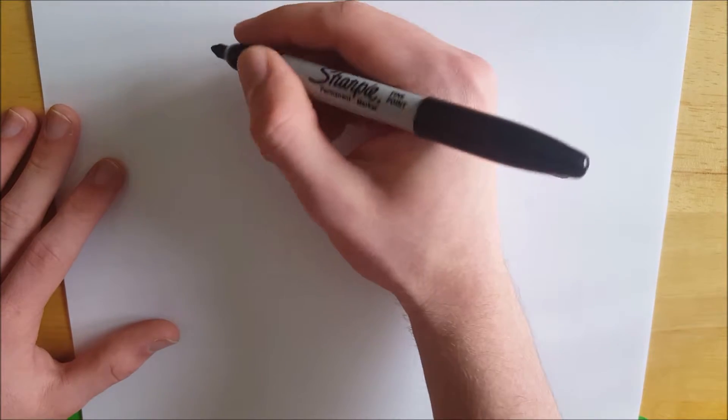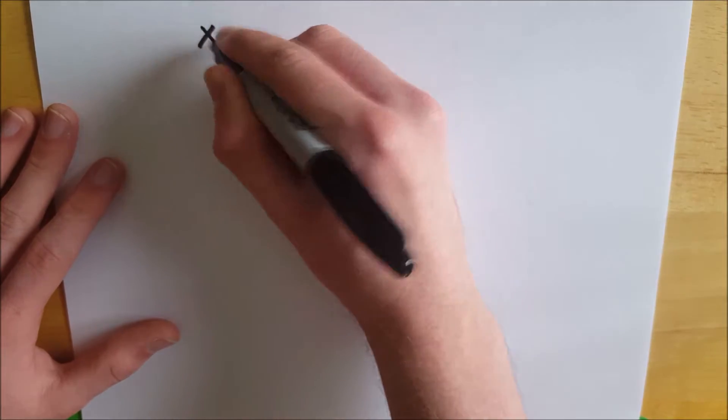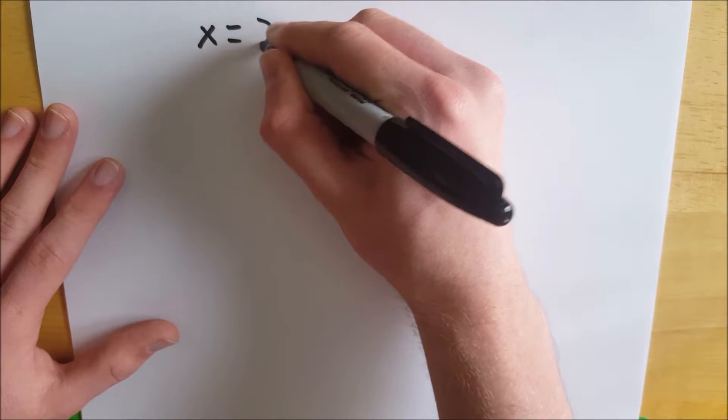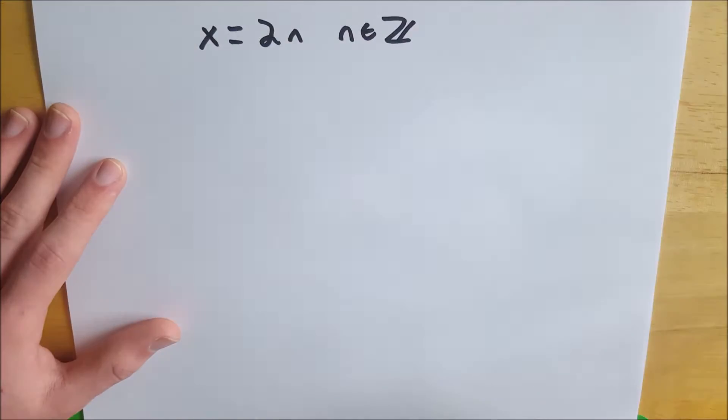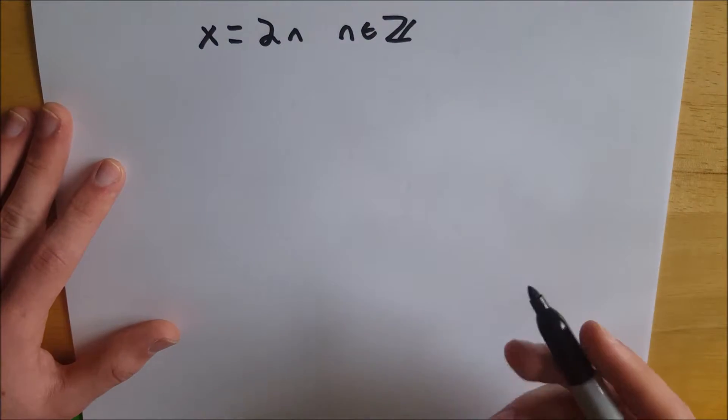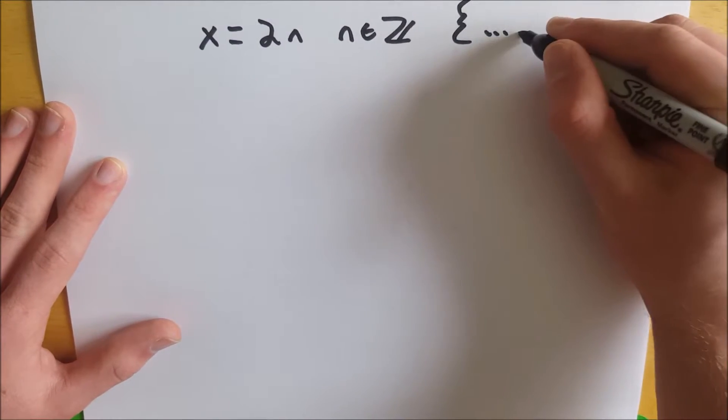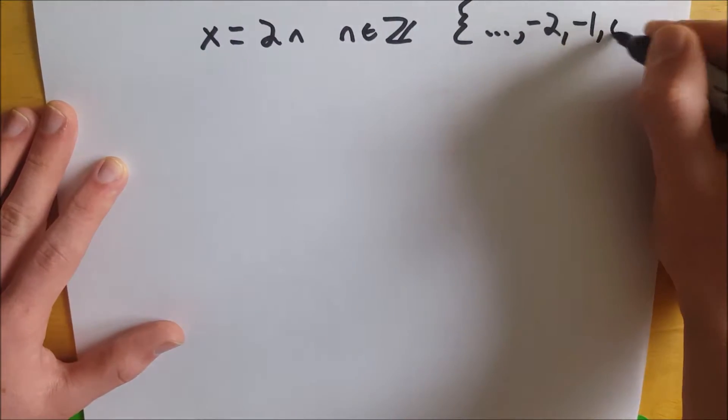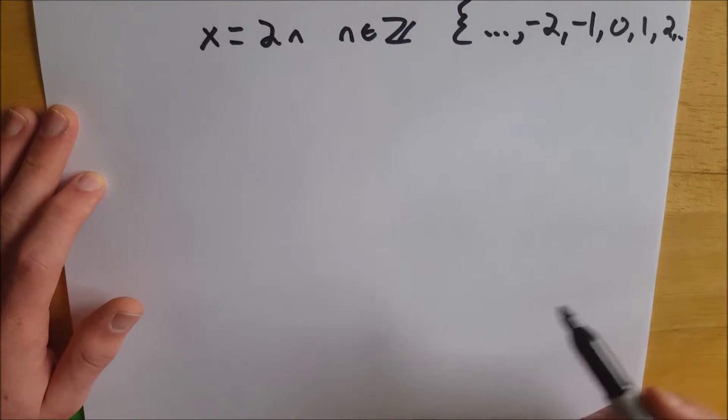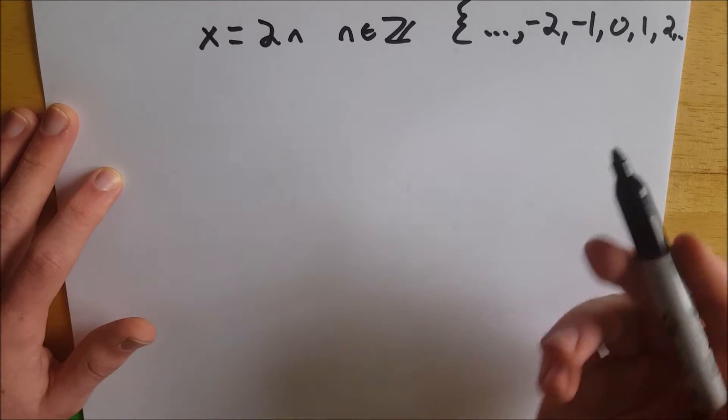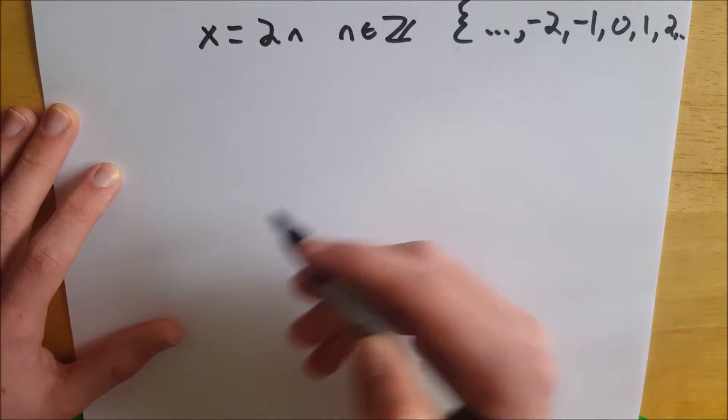So for starters, to prove that a number is even, all you have to do is show that the number—we'll just call it x—is equal to 2n for some n that's an element of the integers. And that's how we denote the set containing all the integers. I'll just write it out. If you're not familiar with what the integers are, this would be it: ..., -3, -2, -1, 0, 1, 2... I'm not going to close the bracket because I don't have room. So to show that a number is even, all you have to do is show that it equals 2 times an integer, a number in that set.